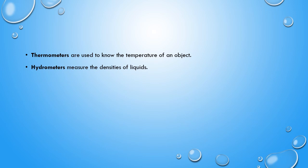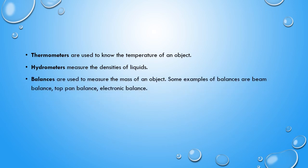The hydrometer measures the density of a liquid — for example, the density of water, oil, or soft drinks. Balances are used to measure the mass of any given object, such as a stone, the human body, a PC, or a mobile phone. Types of balances include the beam balance, stop-pump balance, and electronic balance.